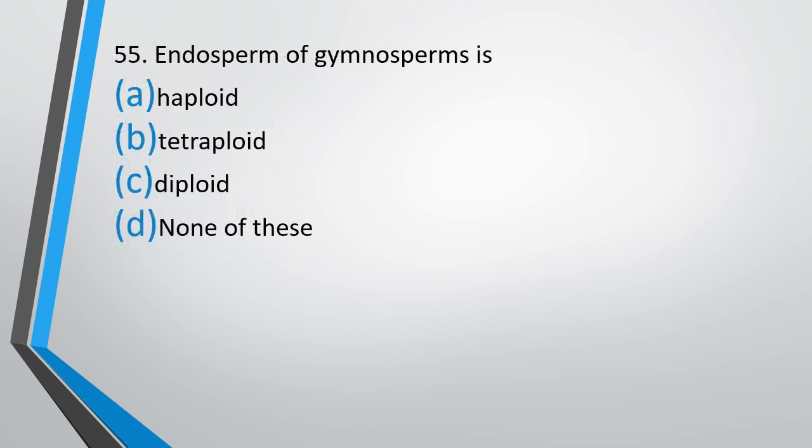Question number 55. Endosperm of gymnosperm is: haploid, tetraploid, diploid, or none of these.